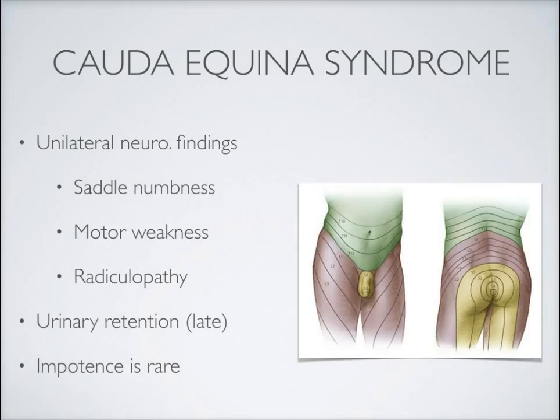Back pain in cauda equina syndrome tends to be unilateral in nature, as are the neurologic features. The neurologic features are characterized by obvious saddle numbness — inner thigh and perianal or perineal region numbness — referring to the areas that would be in contact with a horse's saddle. That is very characteristic for cauda equina syndrome. We're also likely to see unilateral lower extremity motor weakness and unilateral radiculopathy or sciatica in these patients.